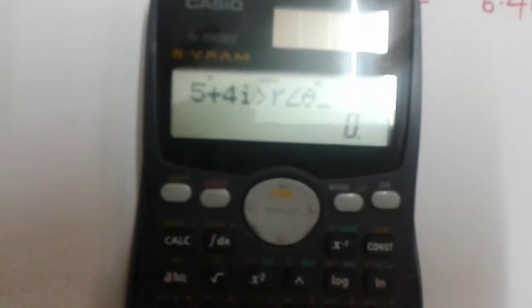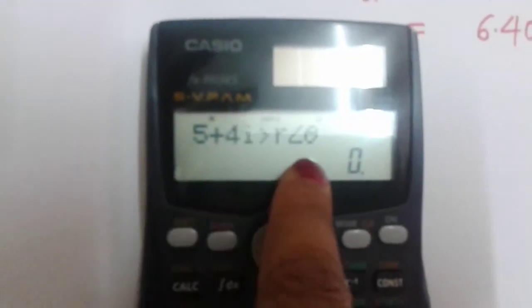Then here, if you press PLUS, r angle theta will come. You can see here it is given r angle theta polar form. So if you press it, you will get 5 plus 4i r angle theta.